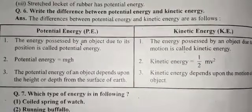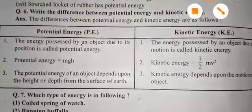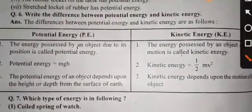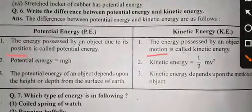The energy possessed by an object due to its motion is called kinetic energy. Potential energy is based on position, kinetic energy on motion.